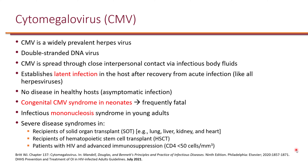Cytomegalovirus (CMV) is a widely prevalent herpesvirus with a double-stranded DNA genome. The primary route of transmission is interpersonal contact via infectious body fluids including saliva, semen, cervical secretions, and breast milk. Once infected, CMV establishes a latent infection after recovery, like all herpesviruses. More than half the population is infected with CMV, but there is no disease in healthy hosts — it is asymptomatic. It can cause congenital CMV syndrome in neonates, which may be fatal, and infectious mononucleosis in young adults, manifesting as fever, malaise, and myalgias.